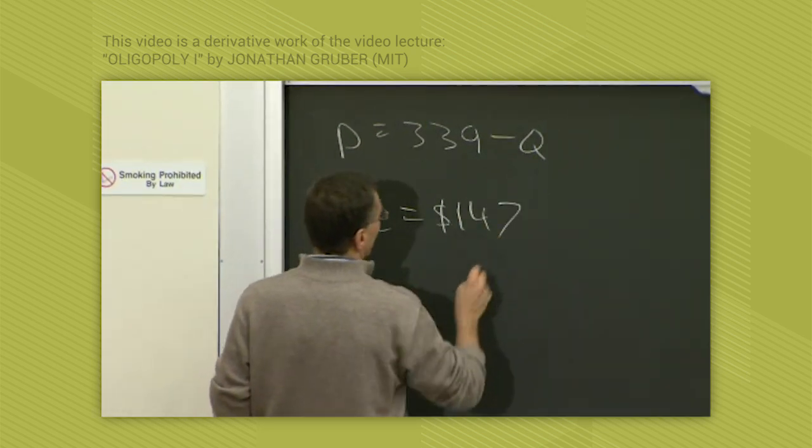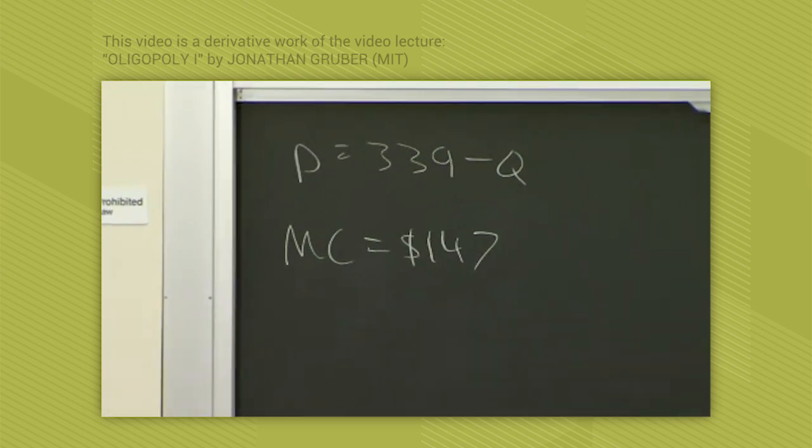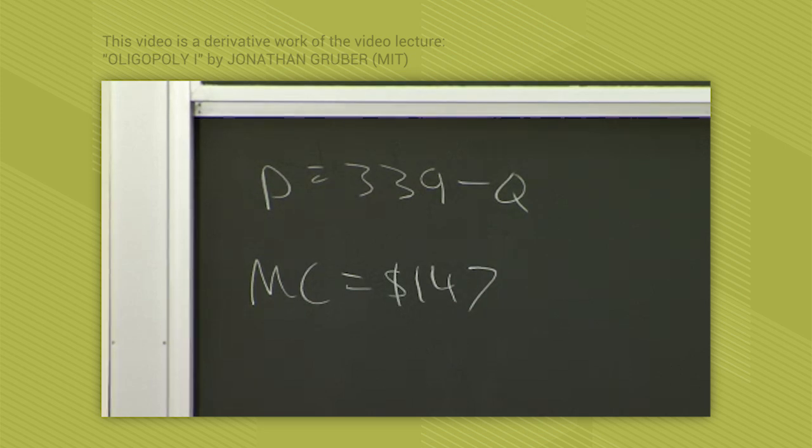And let's also assume the marginal cost is $147. I don't know where Perloff came up with these numbers, but let's just go with them. The specific numbers don't matter.